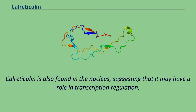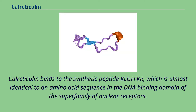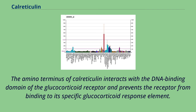Calreticulin is also found in the nucleus, suggesting that it may have a role in transcription regulation. Calreticulin binds to the synthetic peptide KLGFFKR, which is almost identical to an amino acid sequence in the DNA binding domain of the superfamily of nuclear receptors. The amino terminus of calreticulin interacts with the DNA binding domain of the glucocorticoid receptor and prevents the receptor from binding to its specific glucocorticoid response element.